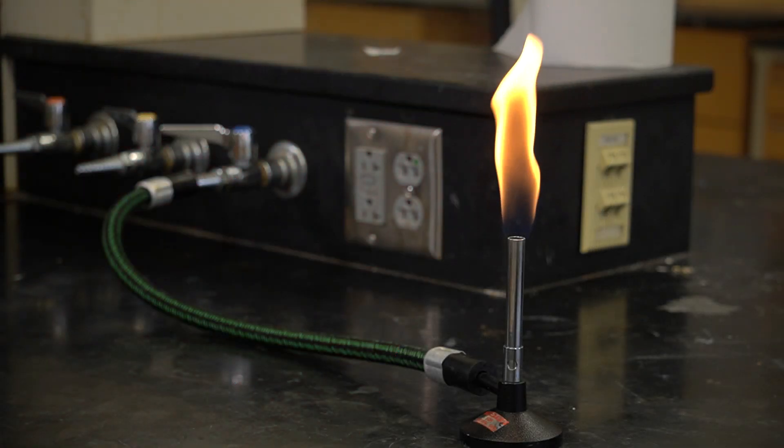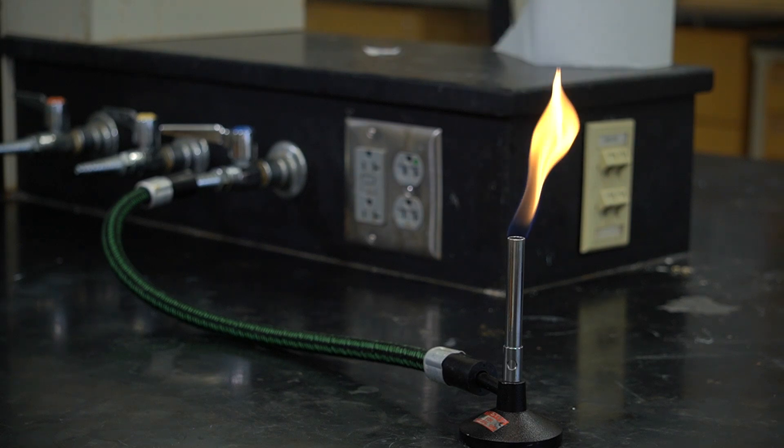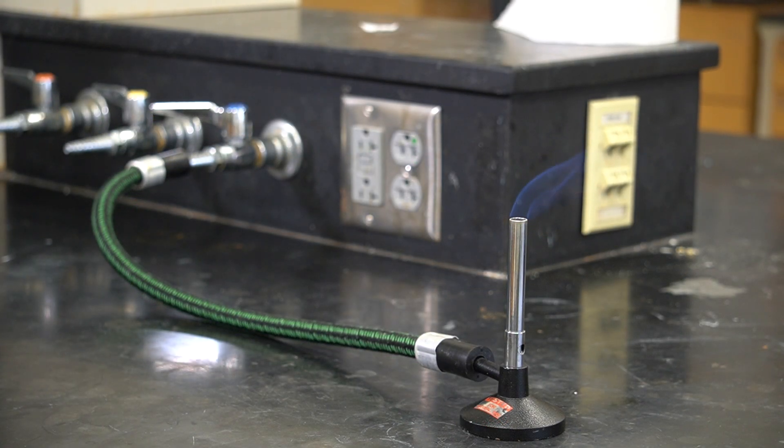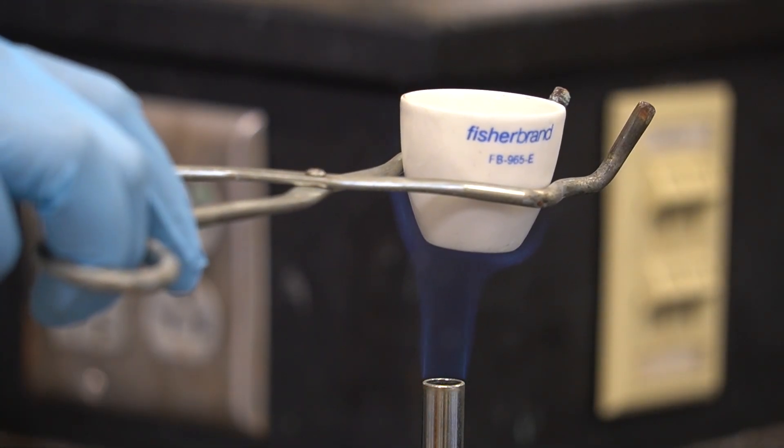In this video, we will discuss how to safely set up and light a Bunsen burner. Bunsen burners produce a single open flame and are used mostly for higher temperature tasks, such as conducting flame tests or heating a ceramic crucible.